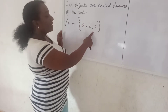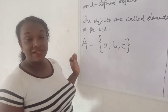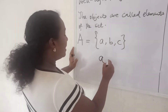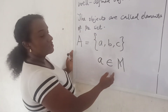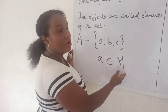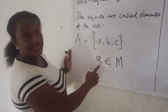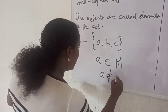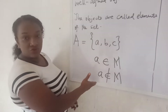The elements are enclosed in curly brackets. If M is a set and A is an element of M, then we write A belongs to M. That is, A belongs to M means A is an element of M, or A is a member of set M. But if A is not an element of M, then we write A is not an element of M.